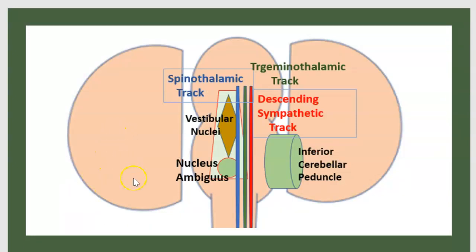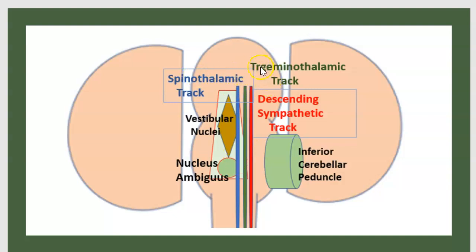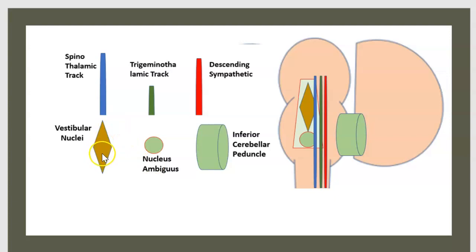Different structures are provided by PICA. The first is the inferior cerebellar peduncle. The second is the nucleus ambiguus. The third is the vestibular nucleus, and three tracts: the spinothalamic tract, the trigeminal tract, and the descending sympathetic tract.